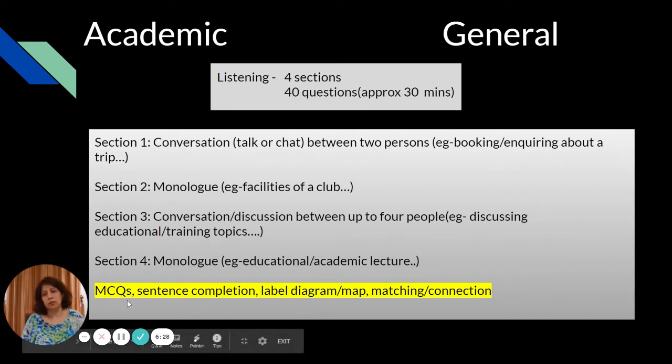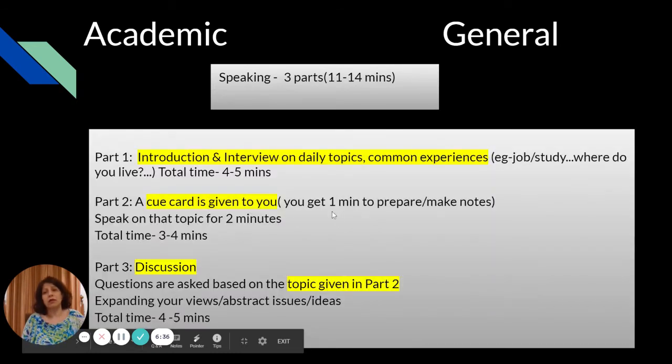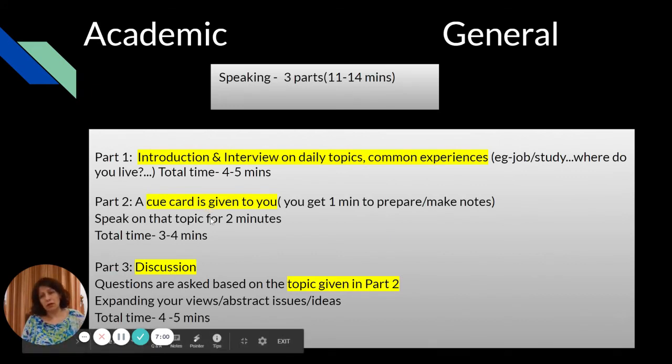These are the types of questions asked: multiple choice, sentence completion, label diagram, maps, matching, or connection. Speaking has three parts. The first part is a general introduction and interview on daily topics like what do you do, work or study, things like that. Part two: a cue card is given to you, you're given a minute to prepare and two minutes to speak. Part three is a discussion based on the topic given in part two to expand your views. Total time is around four to five minutes.